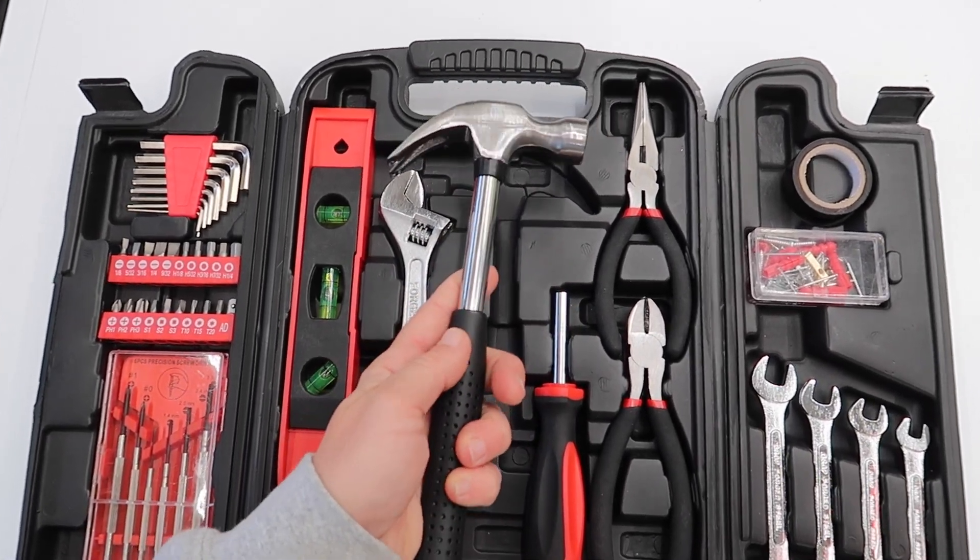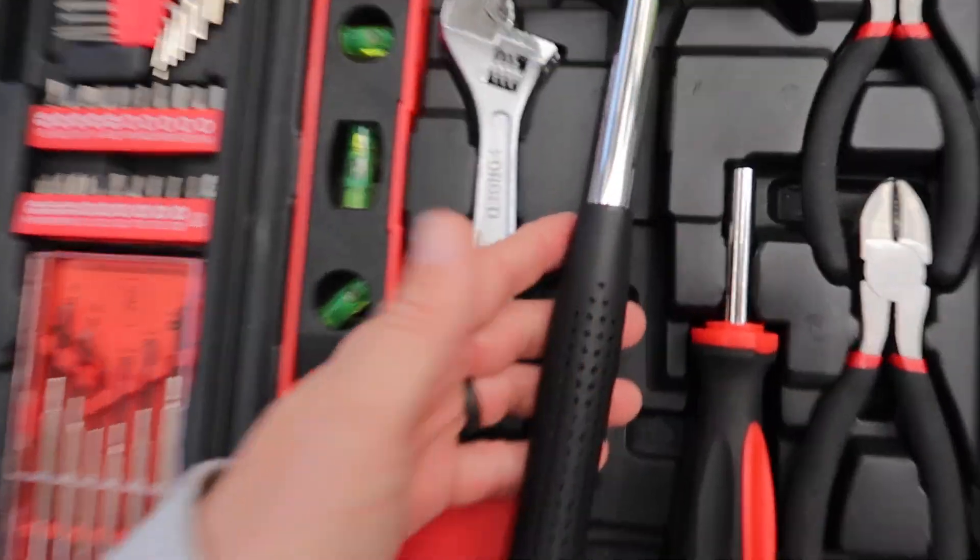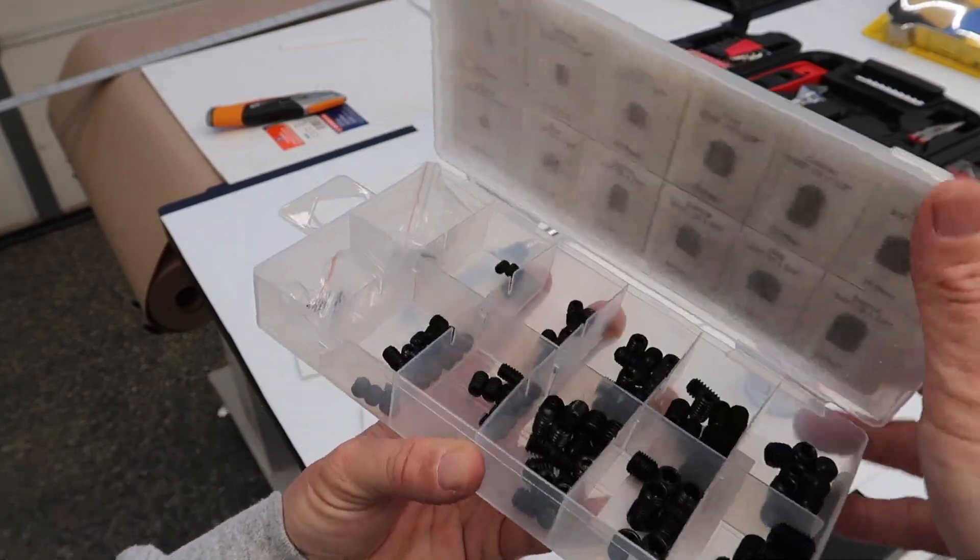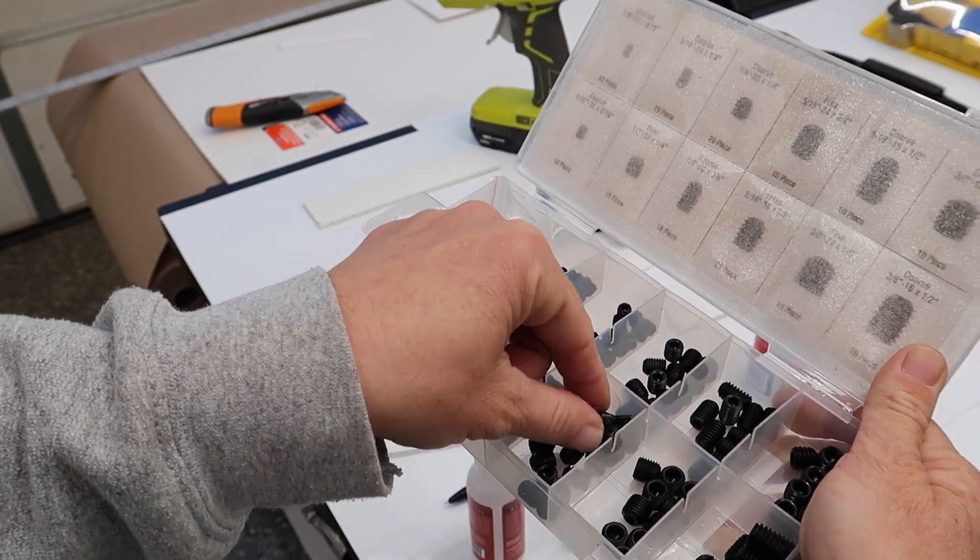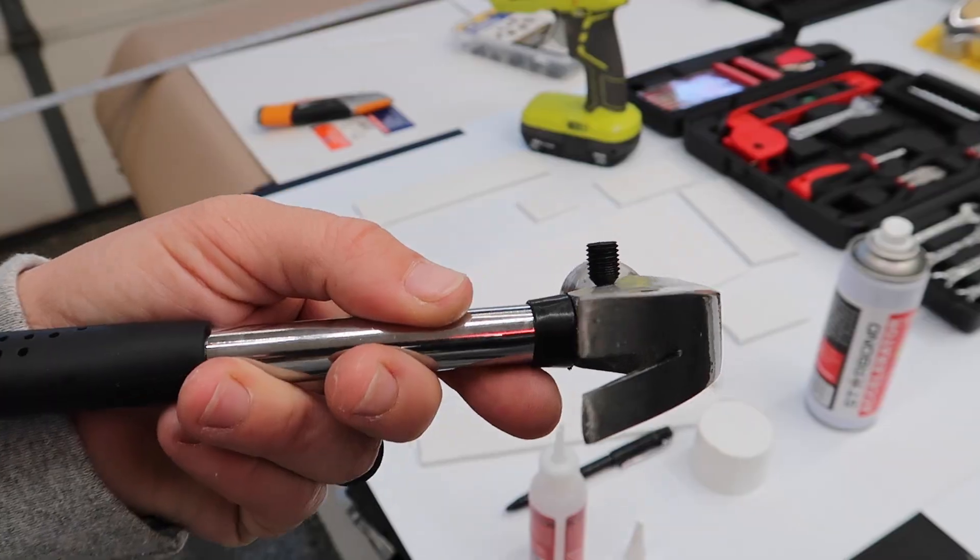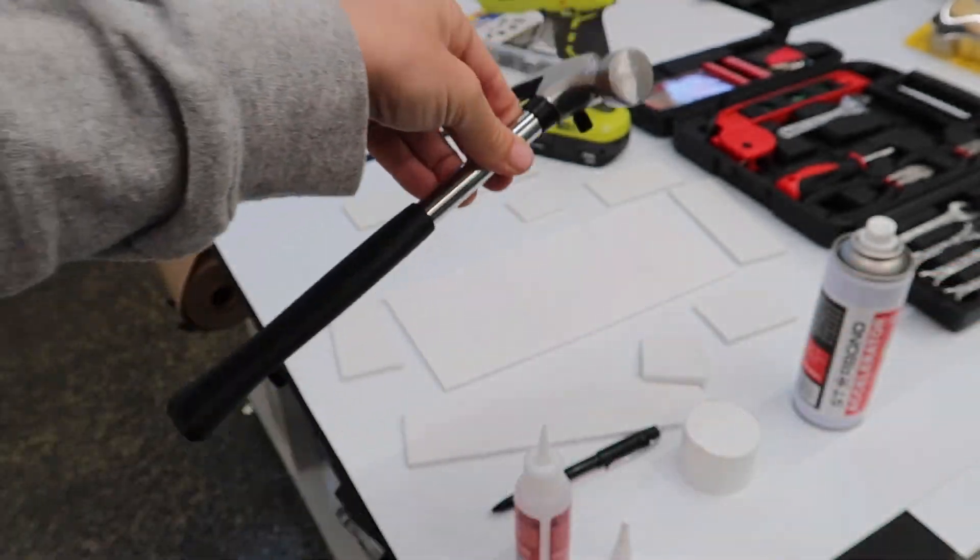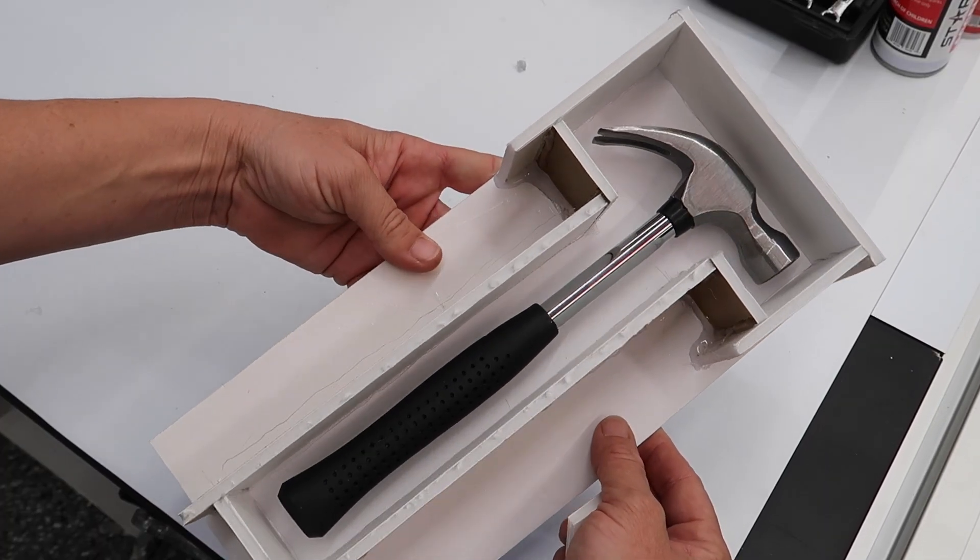I got this set of screw assortments at Harbor Freight. It's multiple different sizes and heights. I'm using these to just offset the tool while making the mold, and then that'll be the area that the epoxy is gonna pour inside.